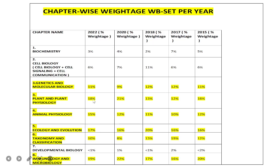Plant physiology percentages are also quite high across years. Taxonomy and classification used to have a huge number of questions, but in 2022 they were reduced. Animal physiology is also an important portion, as is genetics and molecular biology. Other units like biochemistry and cell biology have sometimes had more than 10% of the questions asked.